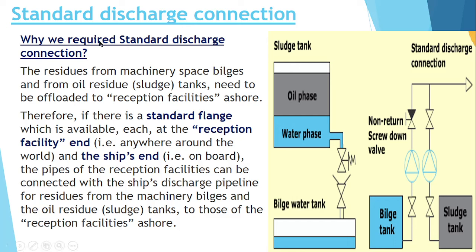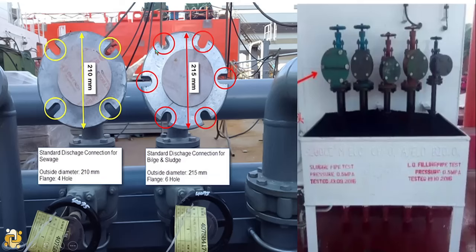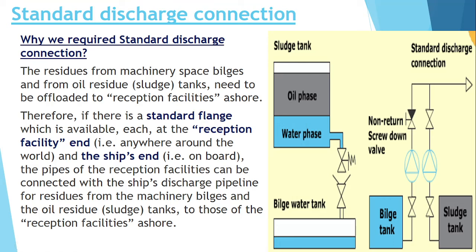Why do we require Standard Discharge Connection? The concept came because there are too many ships, and if each ship has its own different type of standard flange — suppose one ship has a discharge standard of 215 mm for sludge and bilge, and another ship has a standard discharge connection of 185 mm — then the reception facility would need different flange sizes for different ships, which is not physically possible.